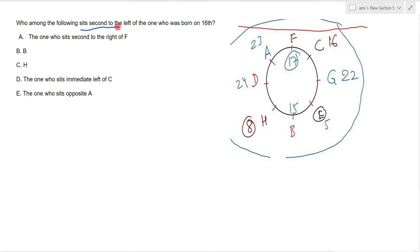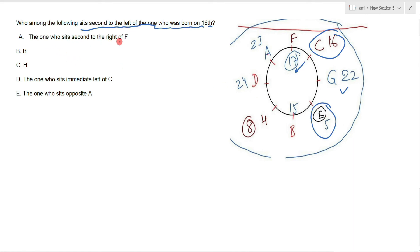Question 2: Who among the following sits second to the left of the one who was born on 16th? The person born on 16th is C. If all people face the center, the first to the left is G, and second to the left is E. So E with date 5. Checking the options, the answer is option number E.